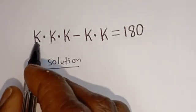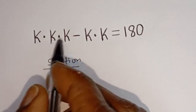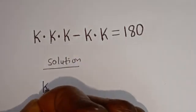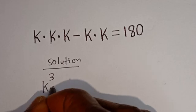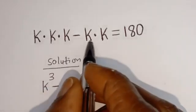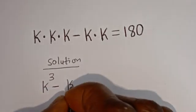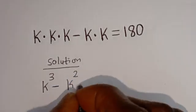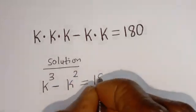Now here we have k multiplied by k multiplied by k — this is k to the power of 3 — minus k multiplied by k, which is k squared, is equal to 180.